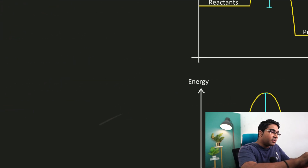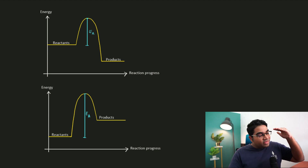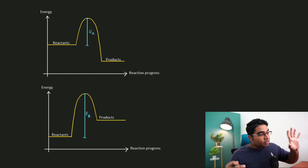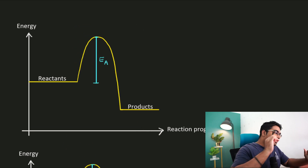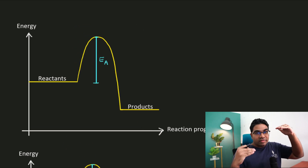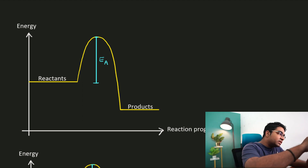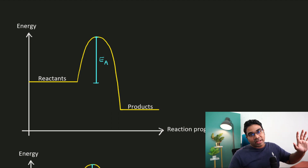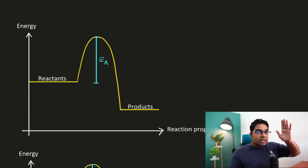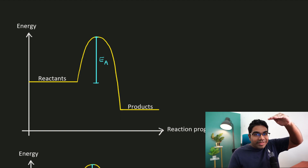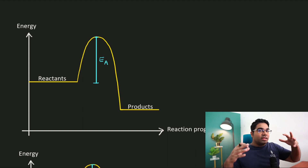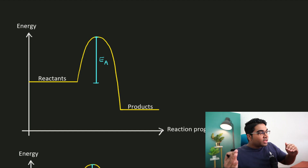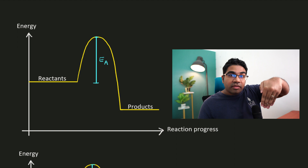Let's look at activation energy in terms of a graph. These two graphs map the energy level of the reactants and products as the reaction progresses. The x-axis is not a time axis — it only shows the reaction progress. In the first graph, the reactant particles have to climb a hill, and once they reach the top, only then can they form the products. This energy barrier is what the reactant particles must overcome; if they don't have enough energy, they simply cannot become products. EA stands for activation energy.